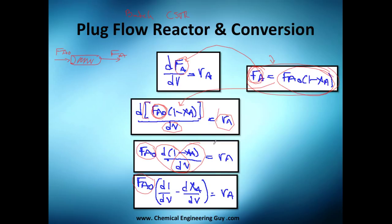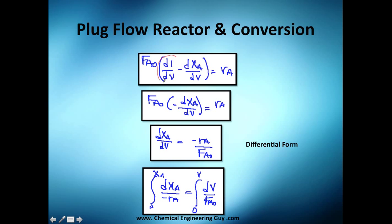By mathematics, the derivative of any constant is zero, so that term disappears. We're left with FA0 multiplying the derivative of xA with respect to volume. Rearranging, we move the negative sign and FA0 to the right-hand side.